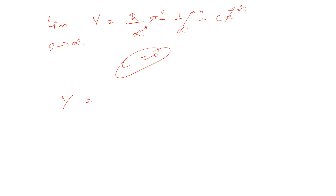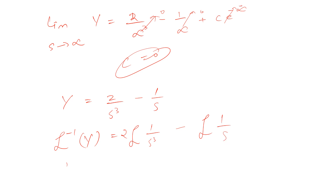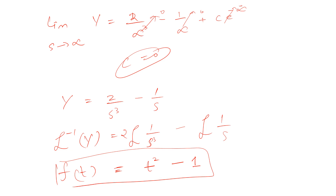So Y(s) = 2/s³ − 1/s. Applying the inverse Laplace transform, 2/s³ corresponds to t², and 1/s corresponds to 1. Therefore, the solution is y(t) = t² − 1. We can verify this by differentiating and substituting back into the original equation.